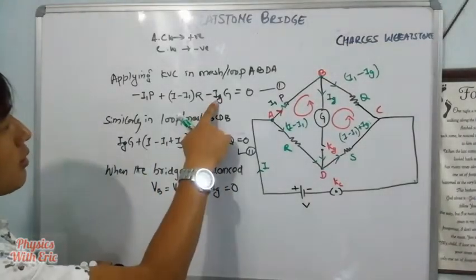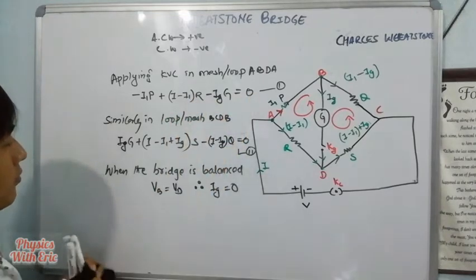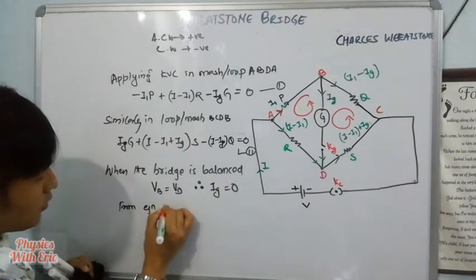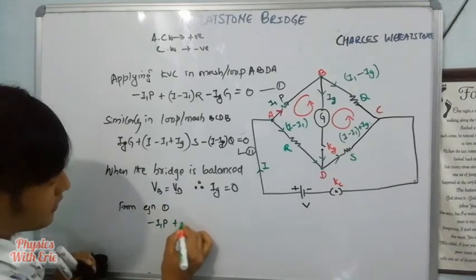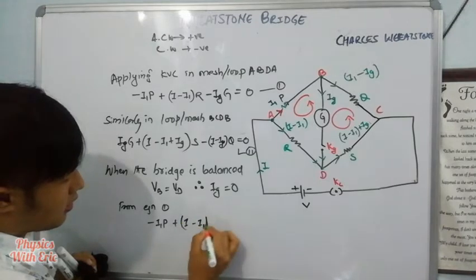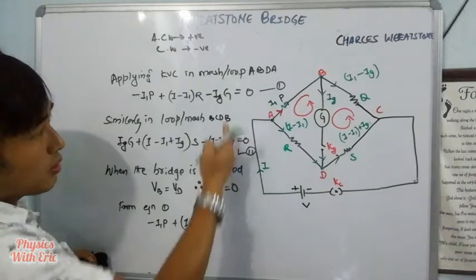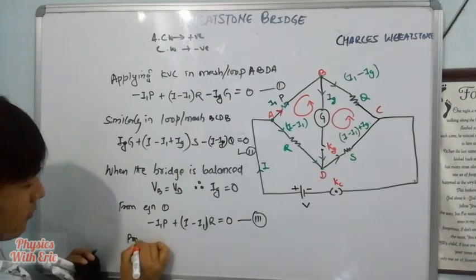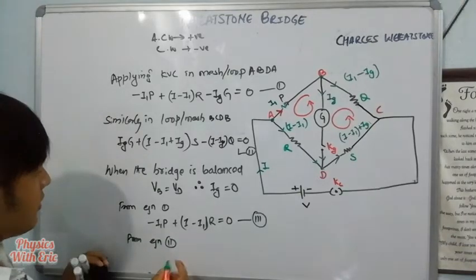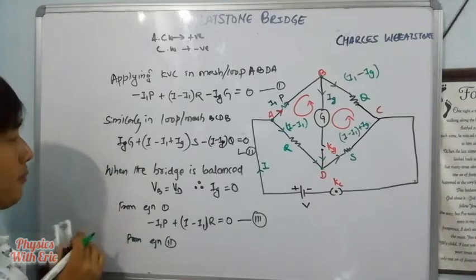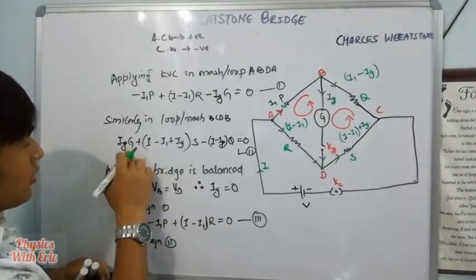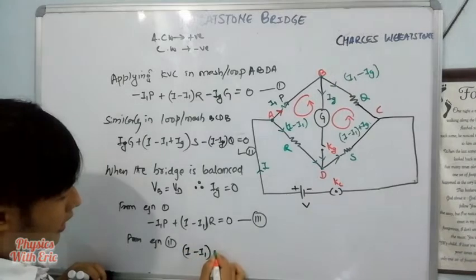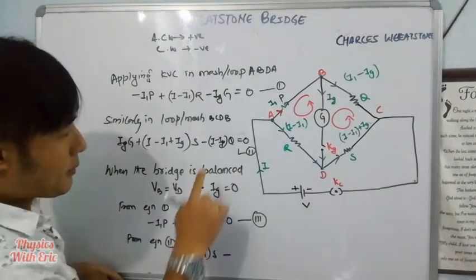When Ig equals zero, I will solve from equation 1. Equation 1 gives: minus I1·P plus (I minus I1)·R equals zero. Since Ig equals zero, we use this condition along with equations 1 and 2 to derive the balance condition.